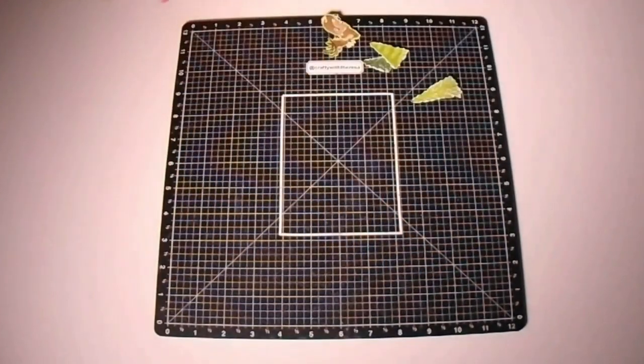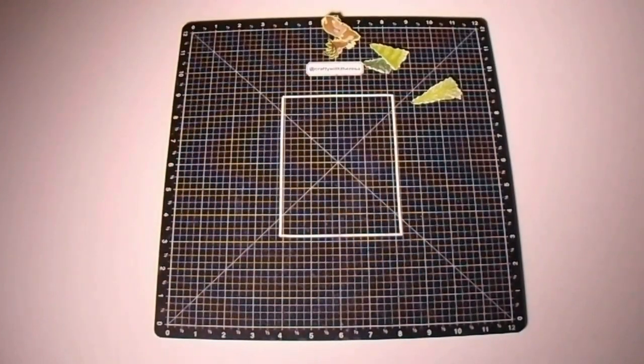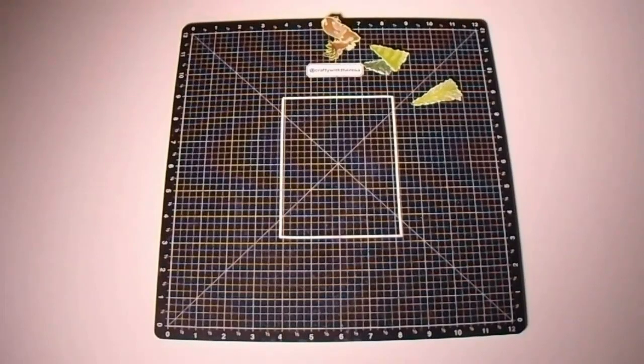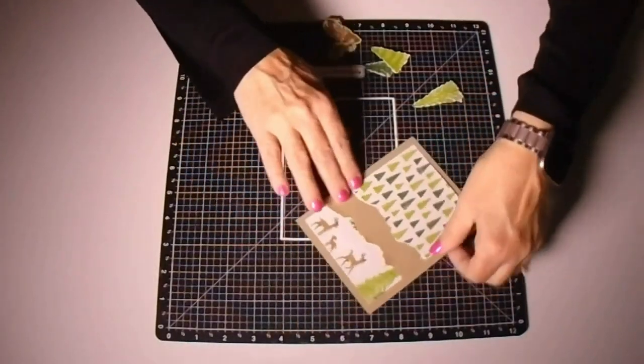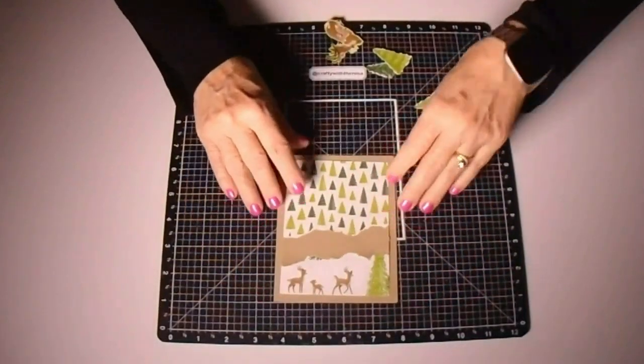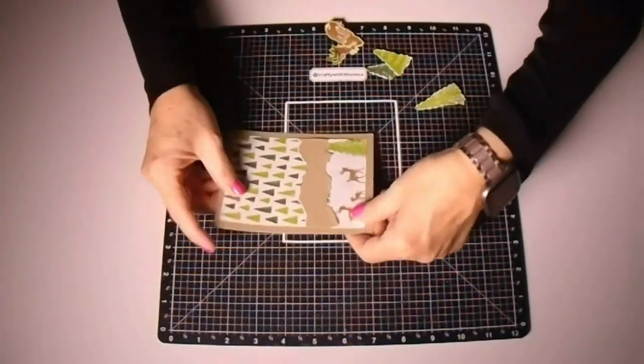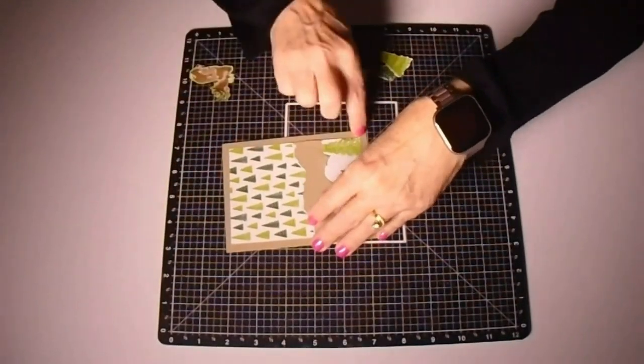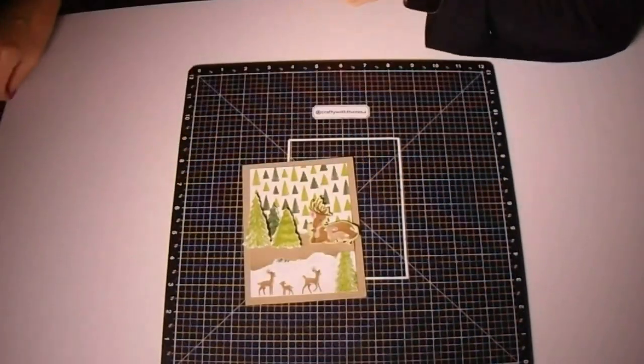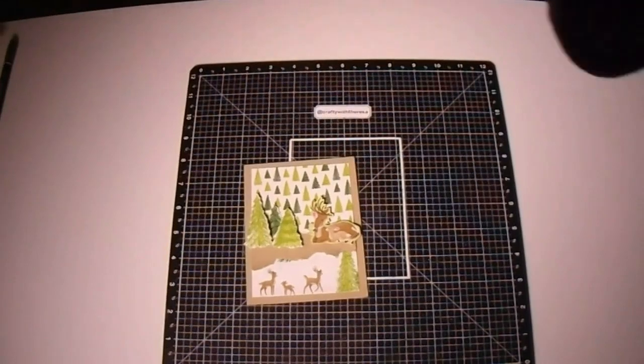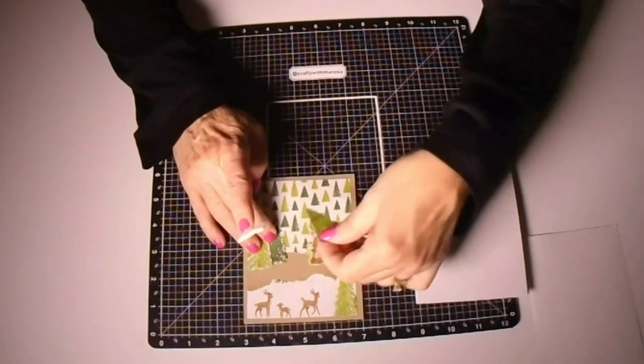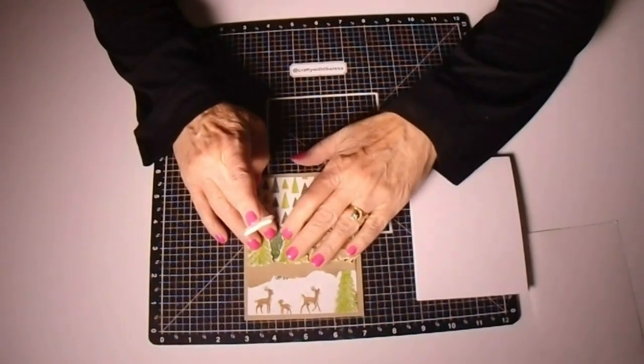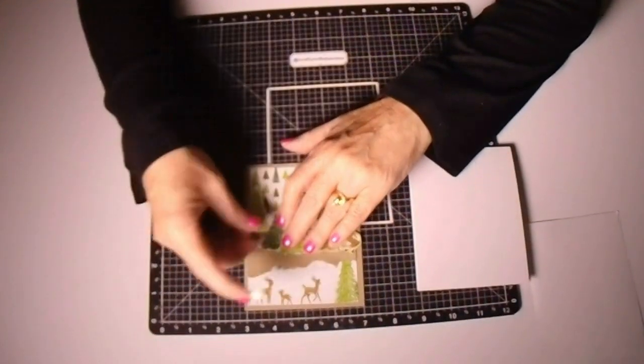And then I'll wiggle them around until I get them where I want them and then remove that backing paper of the dimensional. And this card is finished. What do you think? I think it turned out super cute.